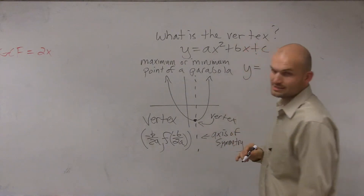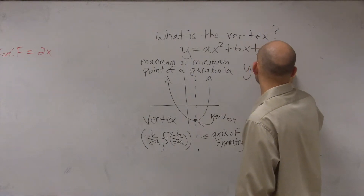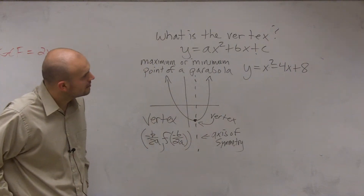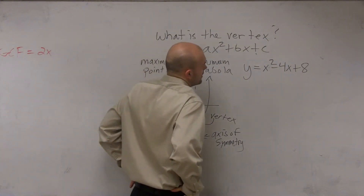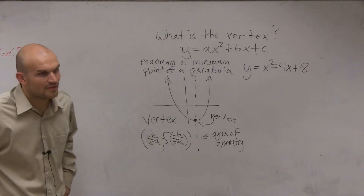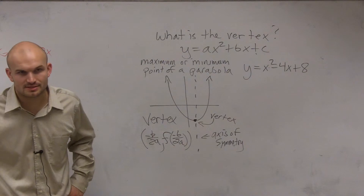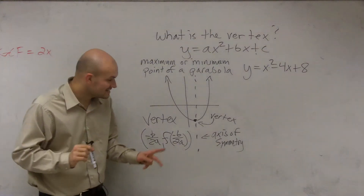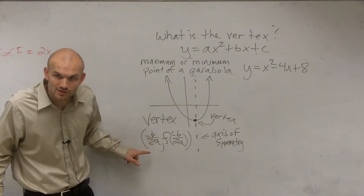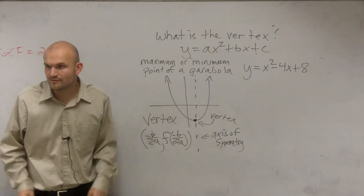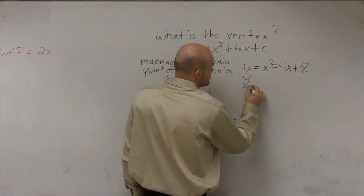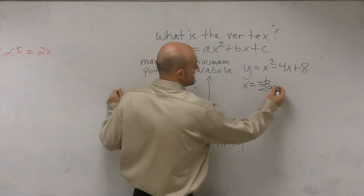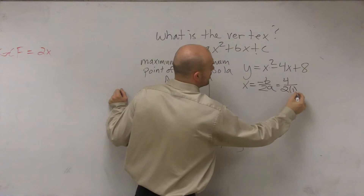So let me give you a problem. Let's say I have y equals x squared minus 4x plus 8. And let's say I wanted to find the vertex. The first thing you have to do is find the axis of symmetry. x equals opposite of b divided by 2a. So we go to our function and say, what is b? Well, b is negative 4, so it's opposite of negative 4, which is positive 4, divided by 2 times 1, which equals 2.